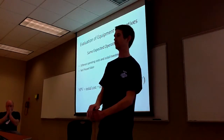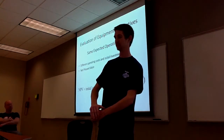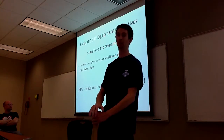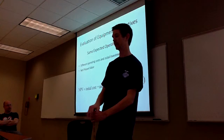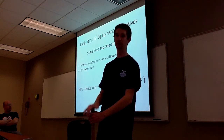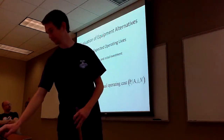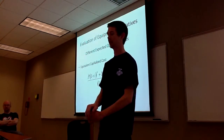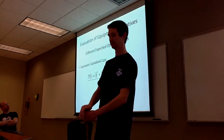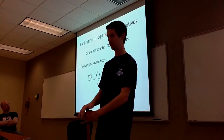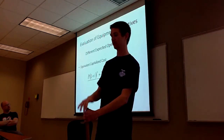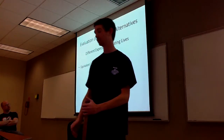For evaluation of equipment alternatives: if you have the same expected operating life but different operating costs and initial investment, you can compare with a net present value — taking your initial cost and adding your annual operating costs, moving all those back to present at time zero. If you have different expected operating lives, you can use an equivalent capitalized cost method, which takes the present value multiplied by (1 + i)^n, plus your yearly operating costs annualized, all divided by (1 + i)^n minus 1.